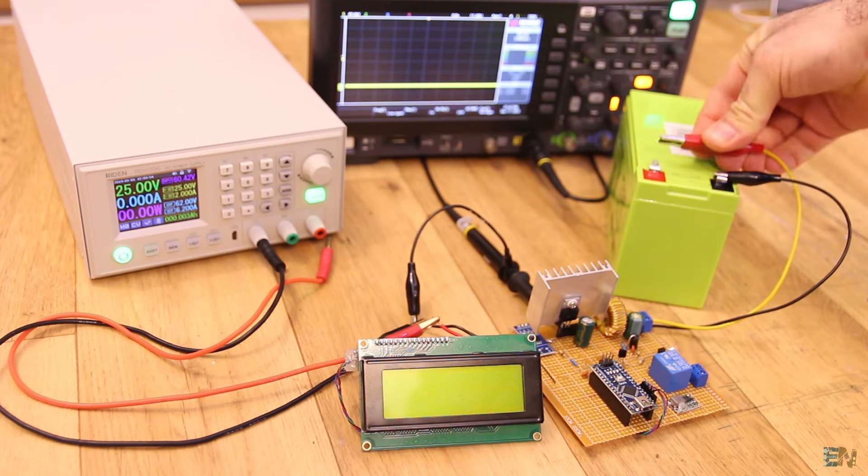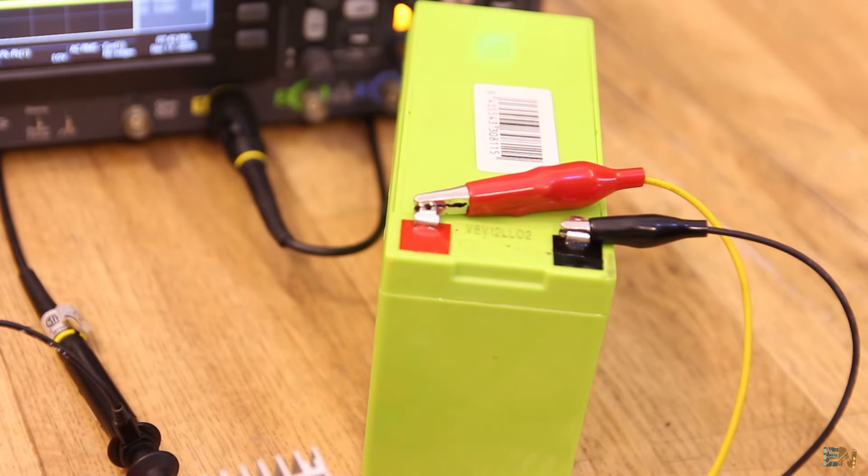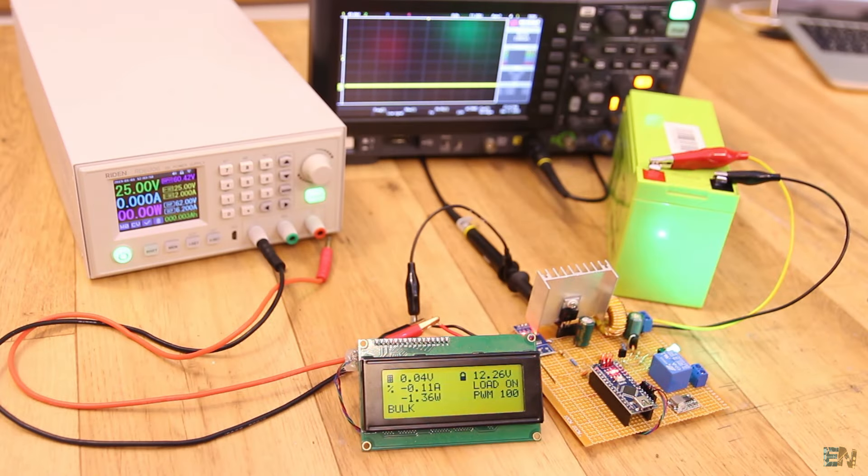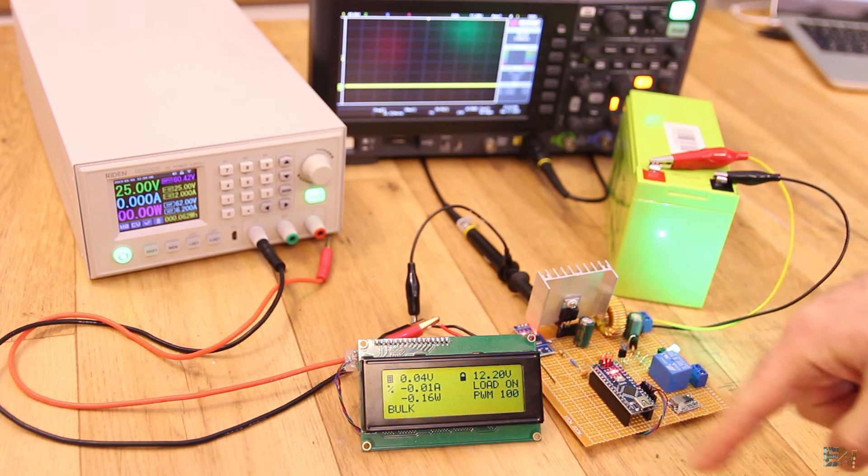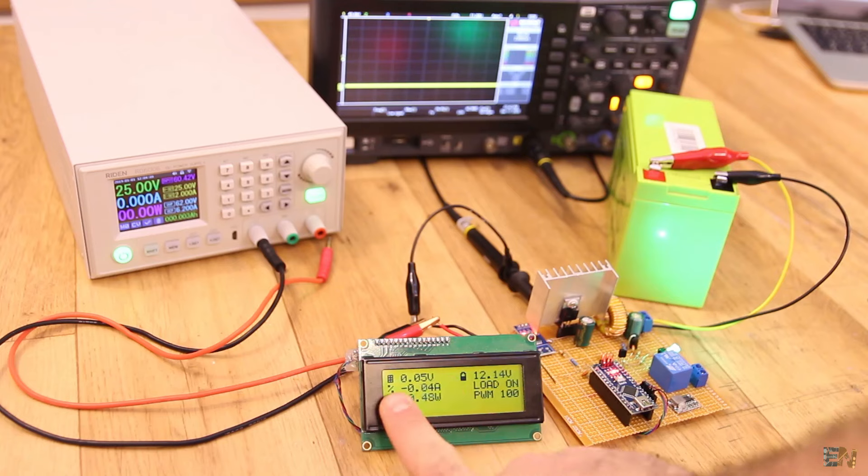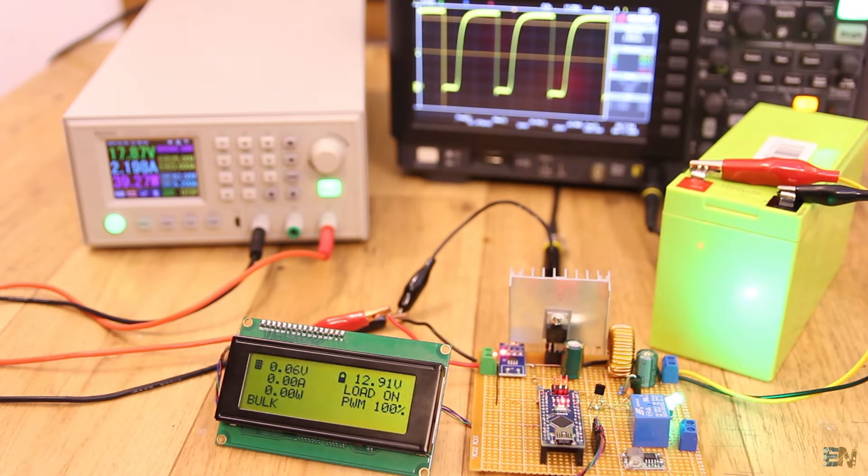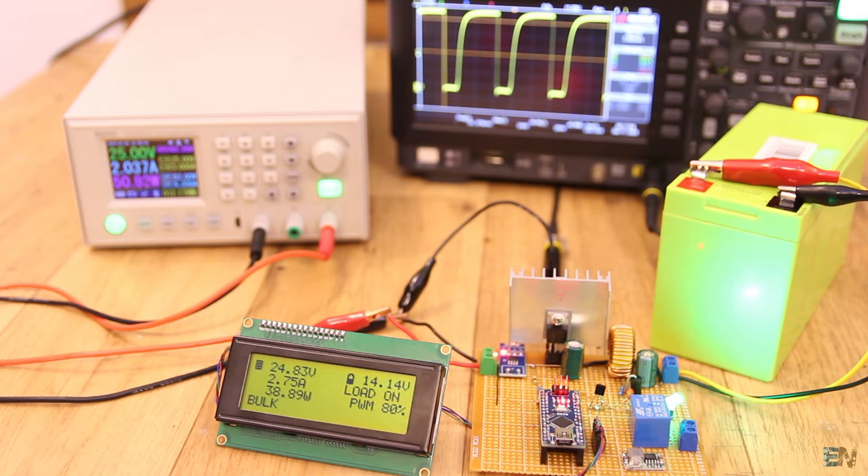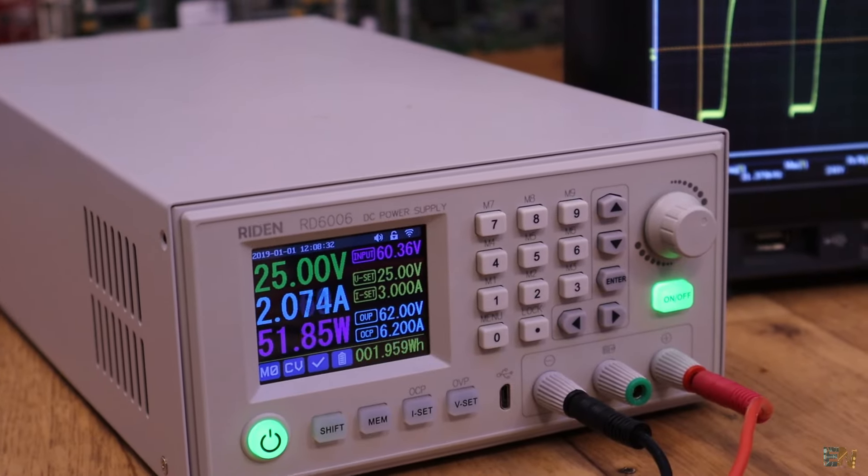I connect the battery at the output. The small buck converter supplies 5V and powers the Arduino and the rest. Till I don't connect the power at the input, the battery is not charging. To simulate a 25V solar panel, I will use my power supply. I connect the voltage at the input. As you can see, the current is limited to 2A because we start in bulk mode.